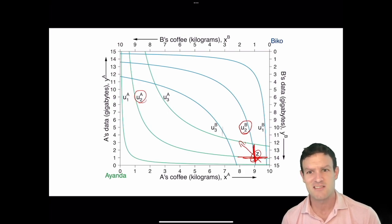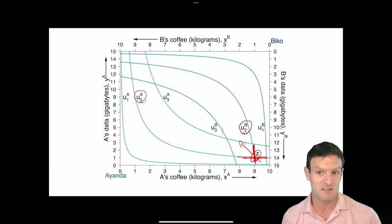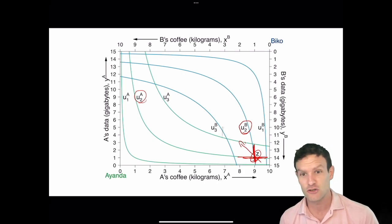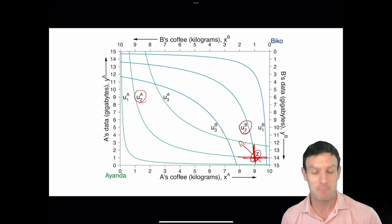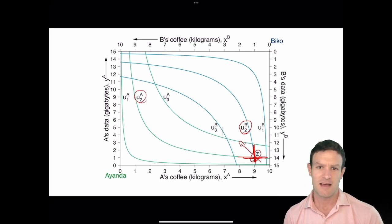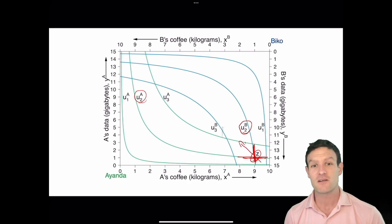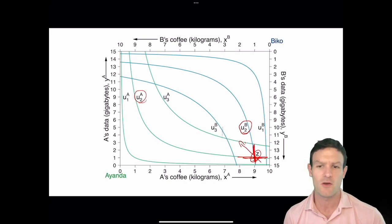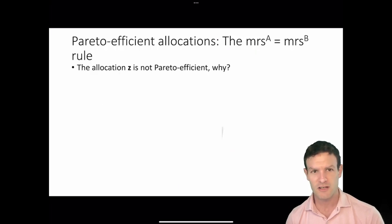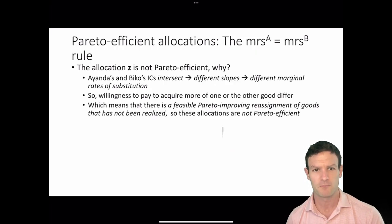If A gives up some X in order to get some more Y, she is going to do better. If B gives up some Y in order to get more X, he is going to do better. The point at which they stop is where their willingness to pay are equal — where their marginal rates of substitution are equal.